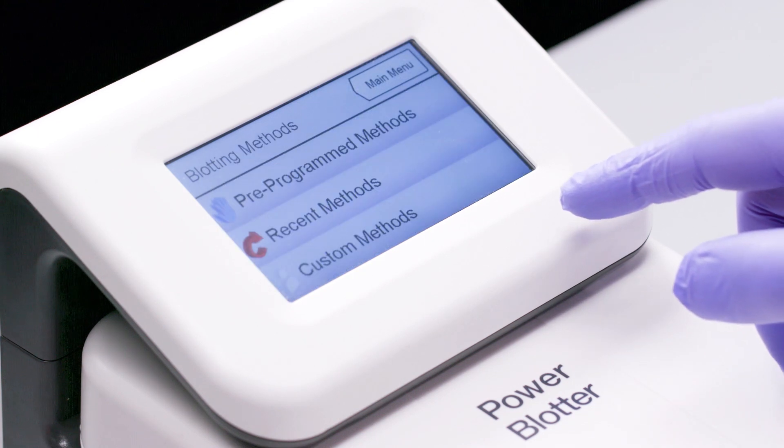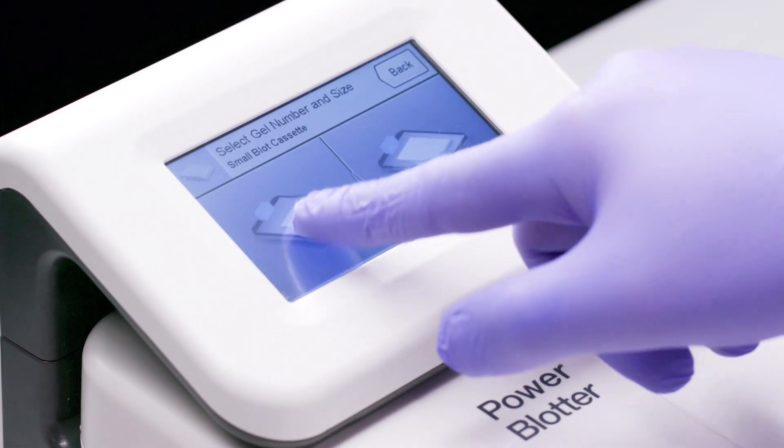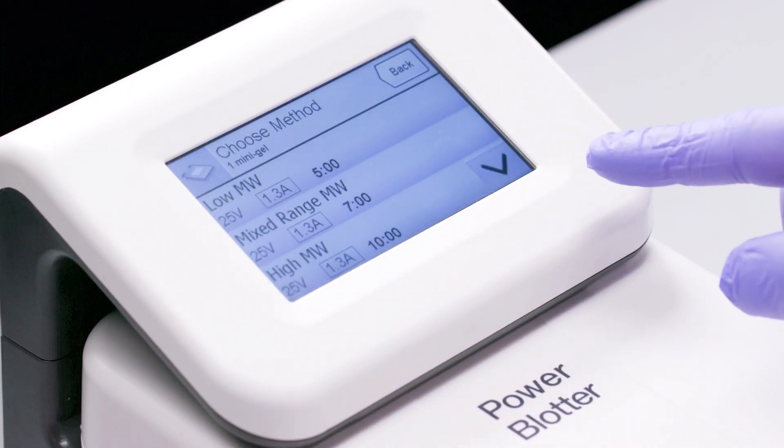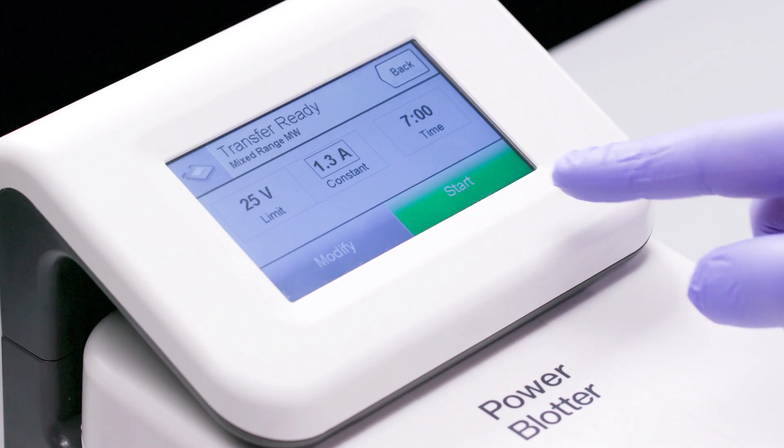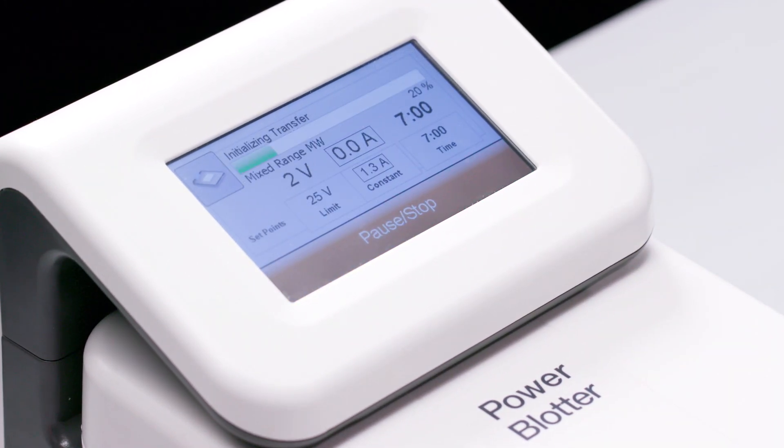The power blotter system has pre-programmed transfer methods that are based on the number of gels being transferred and the molecular weight range of your proteins of interest. Custom methods can also be created. After selecting or creating a method, simply press start to begin the transfer.